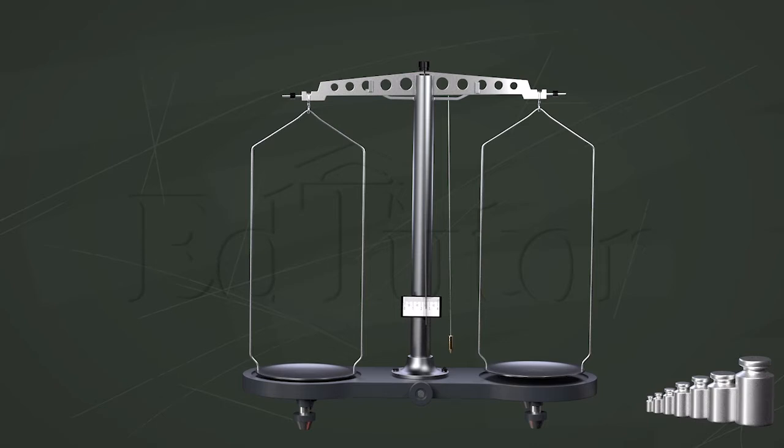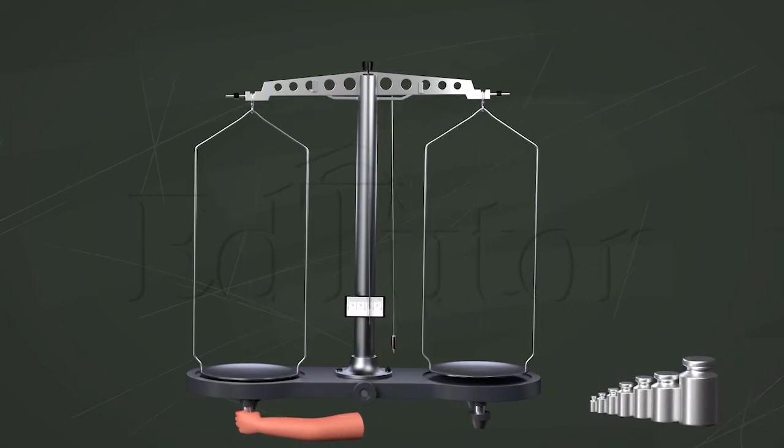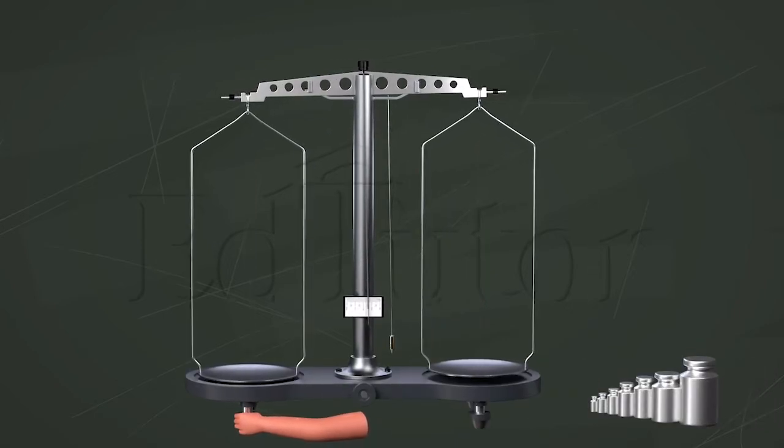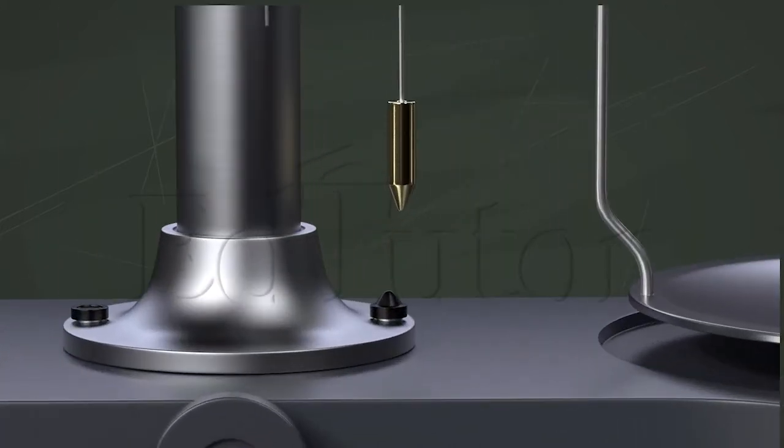For measuring the mass of any object using a physical balance, we start with adjusting the leveling screws with the help of a plumb line to level the platform of the physical balance.